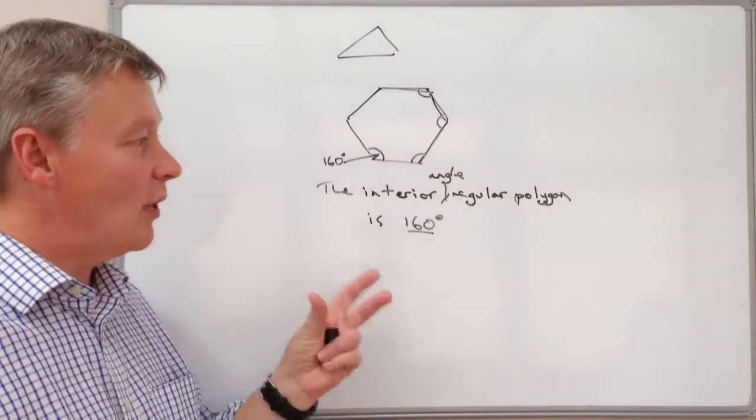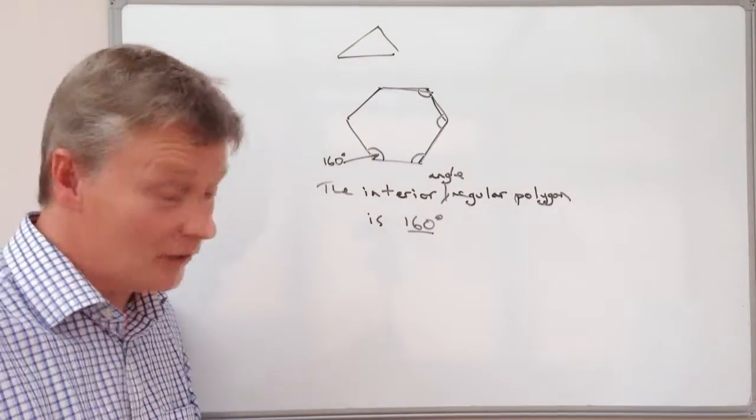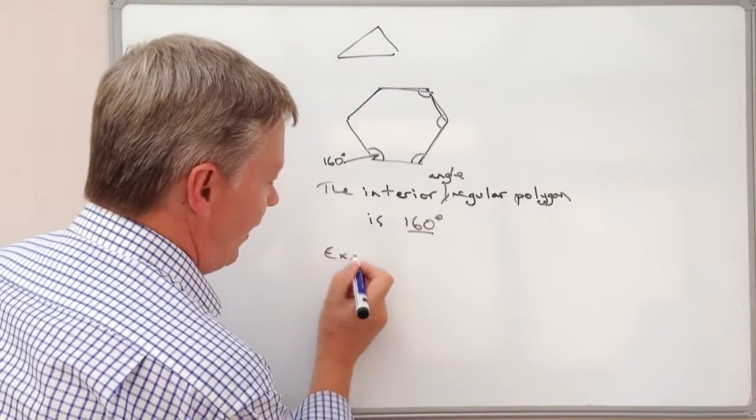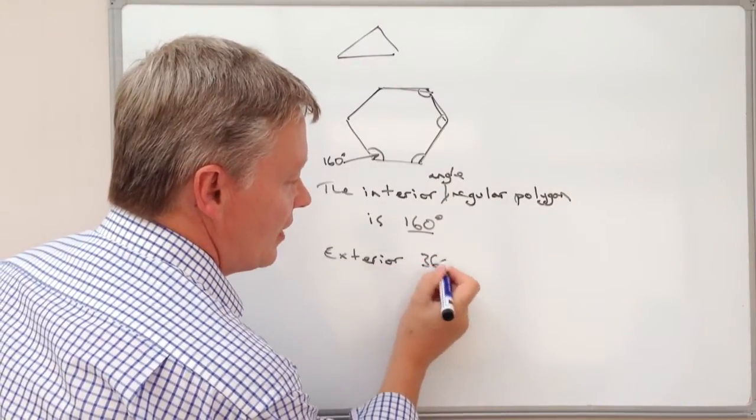Because one of the things about regular polygons is that the sum of the exterior angles always adds up to 360 degrees.